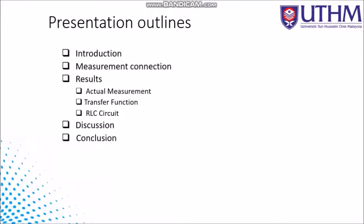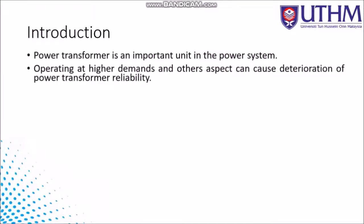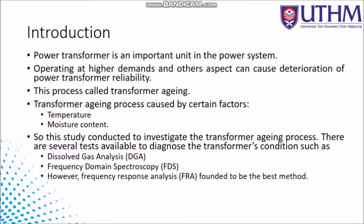The transformer is an important unit in a power system, operating under high demands. Various aspects can cause deterioration of the power transformer — this deterioration is called transformer aging. The transformer aging process is caused by certain factors; we believe that temperature and moisture content are the main causes of transformer aging. This study was conducted to investigate the transformer aging process.